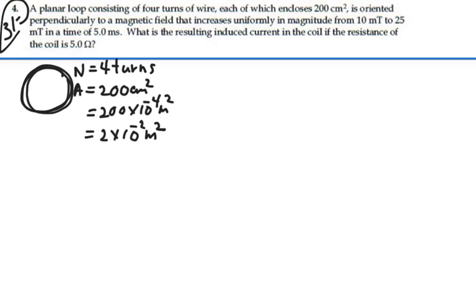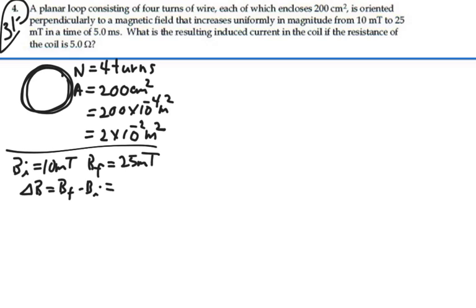That's the area of the loop. So we know that our initial magnetic field is 10 millitesla, and our final magnetic field is 25 millitesla. So our change in magnetic field is going to be our final minus our initial, which will be 15 millitesla, 15 times 10 to the minus 3 tesla. And we're going to do it in a time of 5 milliseconds. And we're also told that the resistance is 5 ohms.